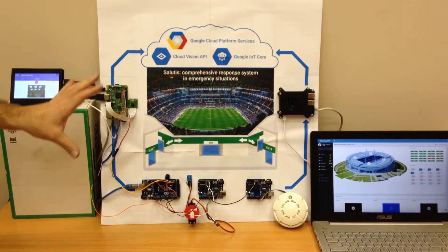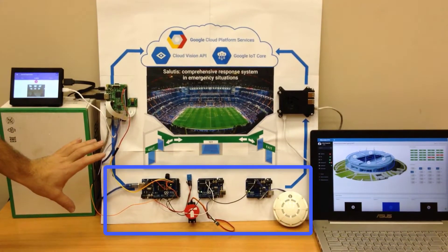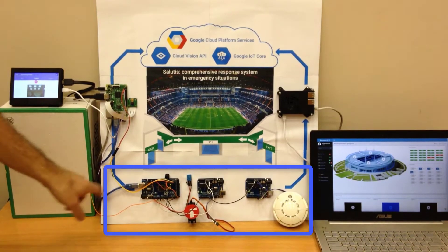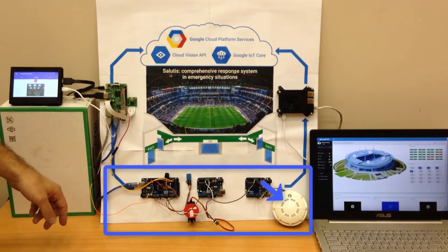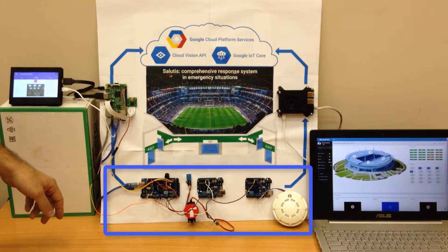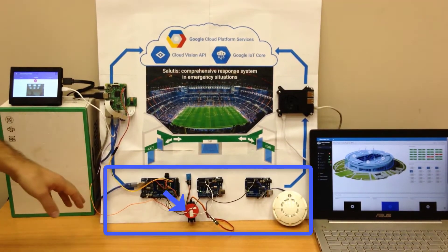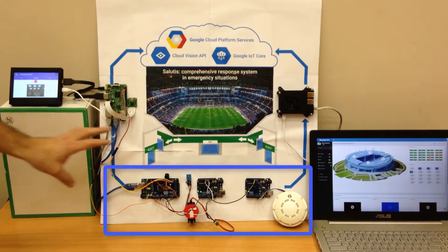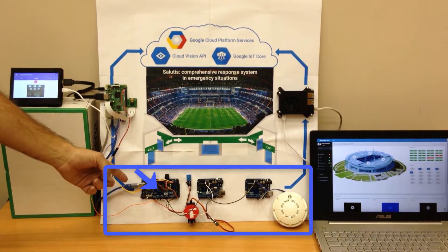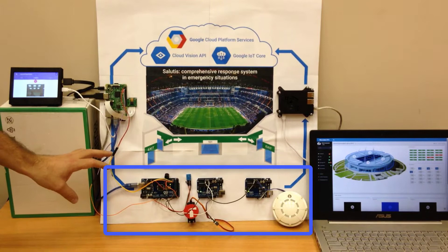FOG architecture consists of three layers. The edge layer integrates endpoint devices such as smoke and fire detectors, actuators, fire extinguishers, water pumps, etc. The edge layer can be covered with low-cost nodes like Arduino, working with endpoint devices.